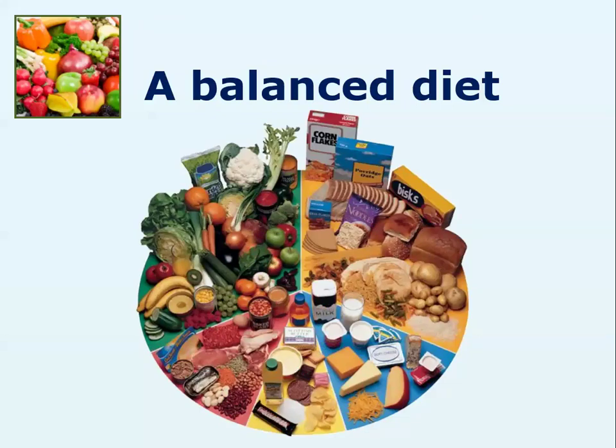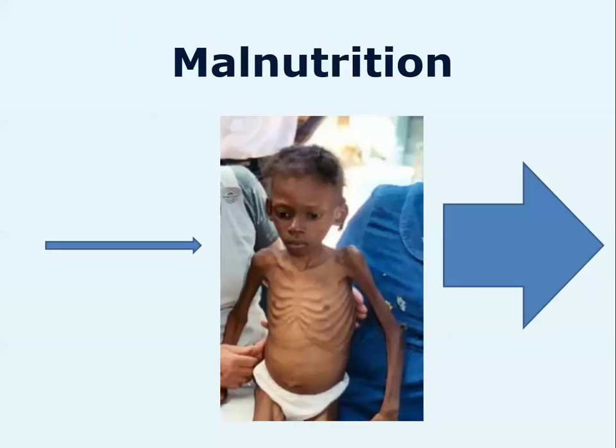So if we're going to have a balanced diet, we need all of those components. You'll have your eat well plate in the back of your planner, and you'll see that everything is separated out into quantities. You need to be looking at whether you're eating the right quantities. What we're going to look at now is what happens if you don't have that balanced diet, because not having one can lead to problems.